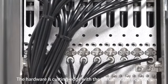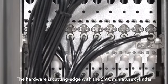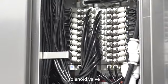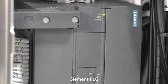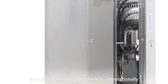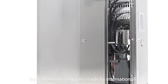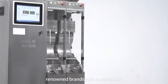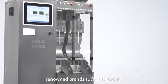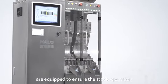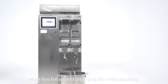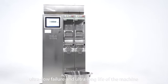The hardware is cutting edge with the SMC miniature cylinder, solenoid valve, Siemens PLC. The bearing rail moving parts made by internationally renowned brands such as NSK and SKF are equipped to ensure the stable operation, ultra low failure and ultra long life of the machine.